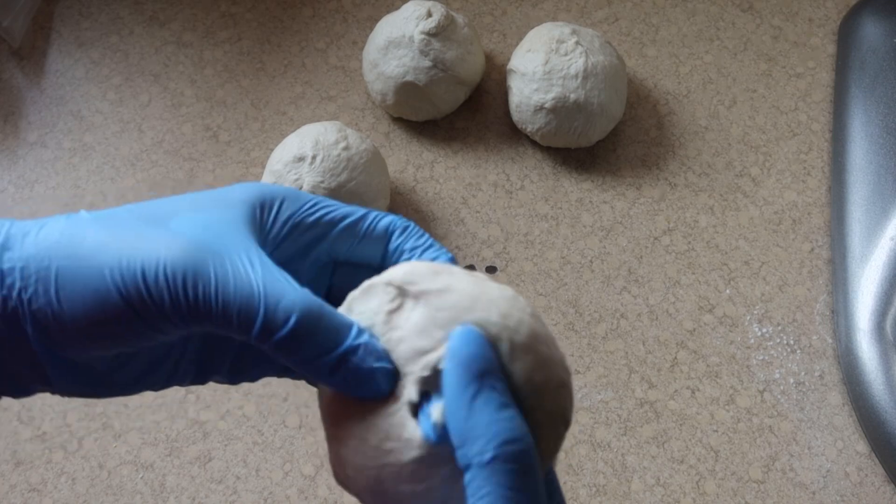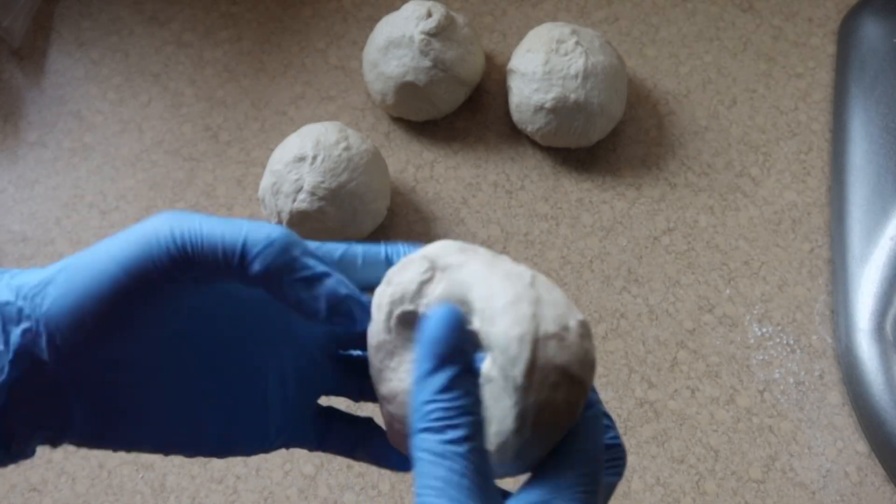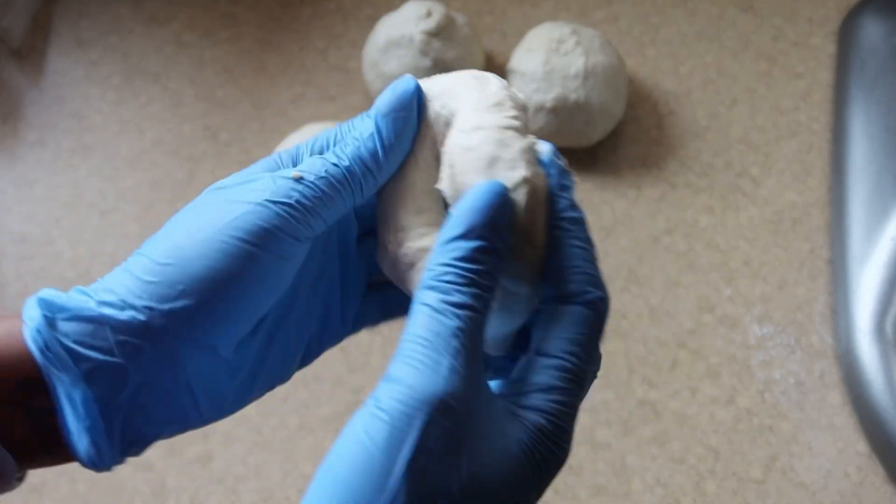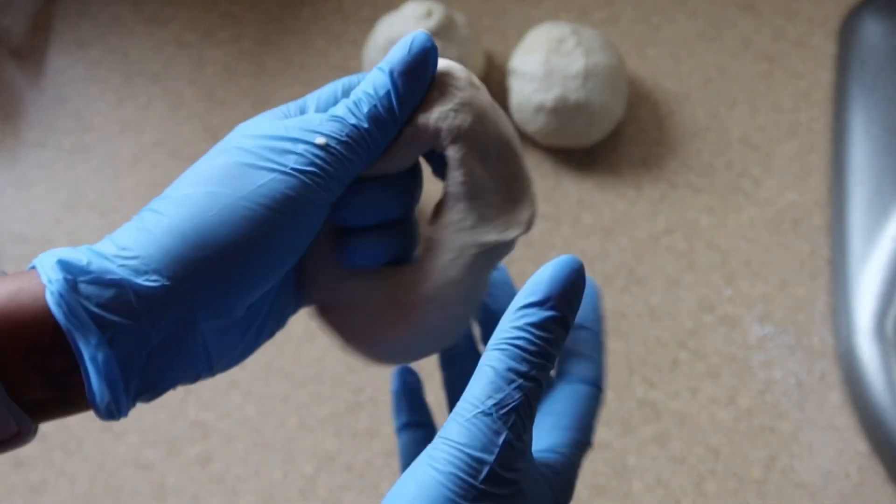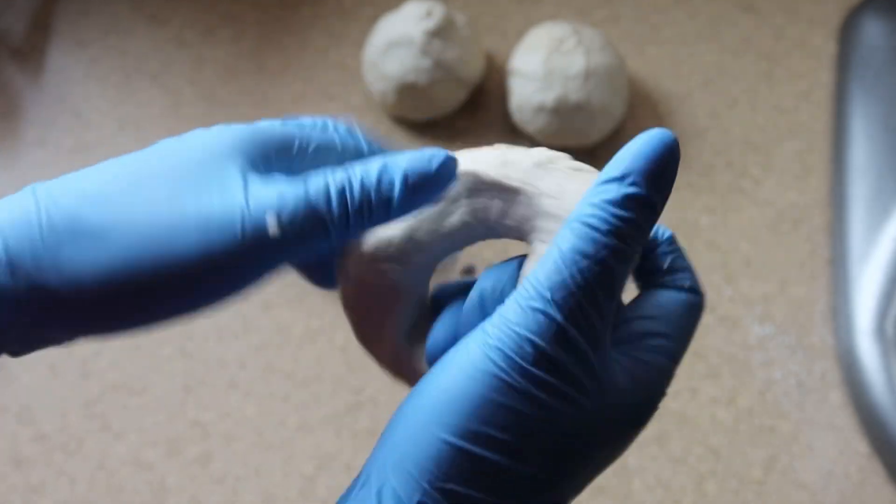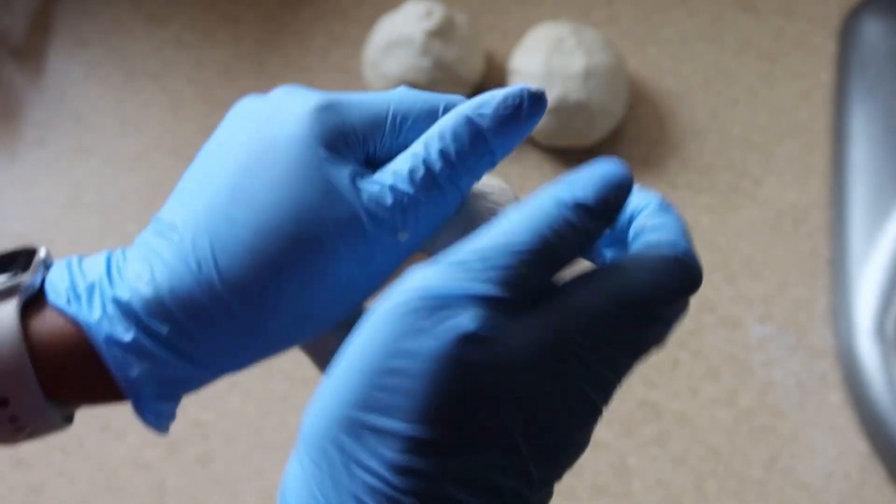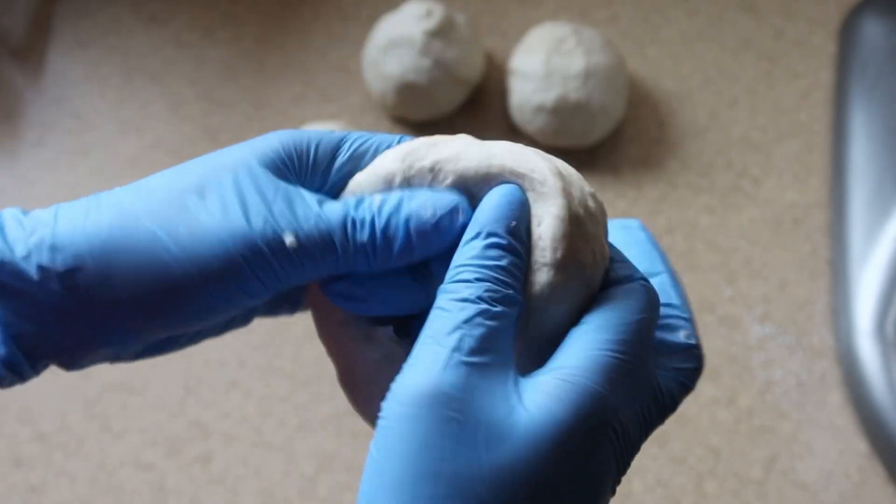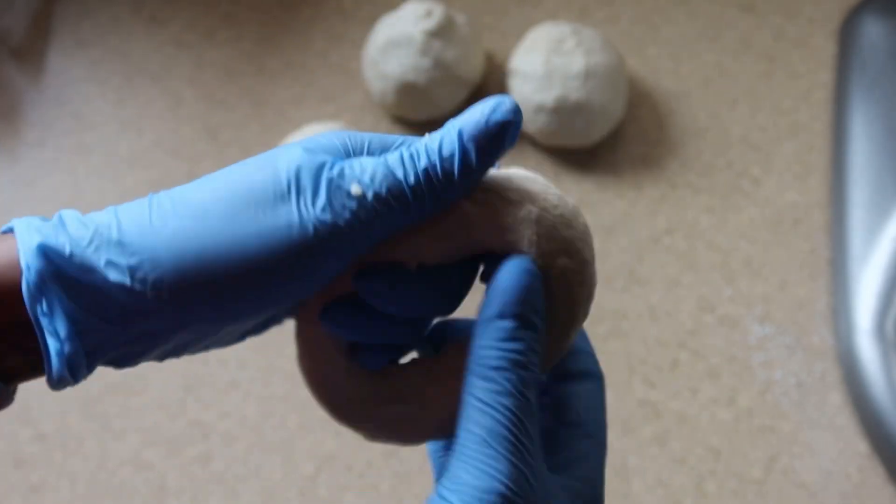Then you just poke a hole in the middle of the bagels. Here's a top tip: I stretch out the hole in the middle a little bit because I do know that it tends to close up in the oven, so yeah, just keep that in mind.